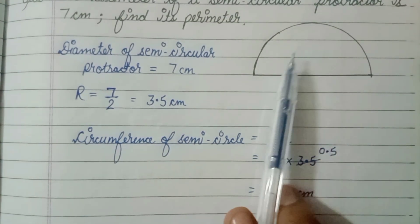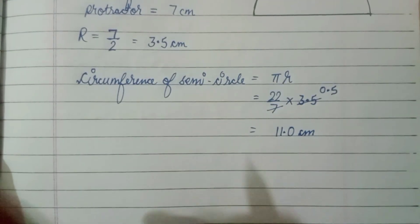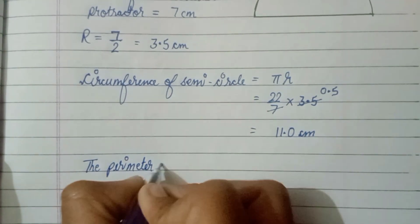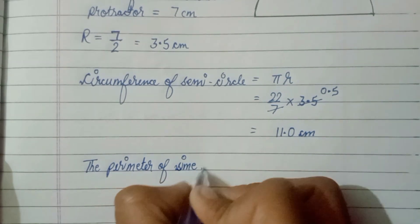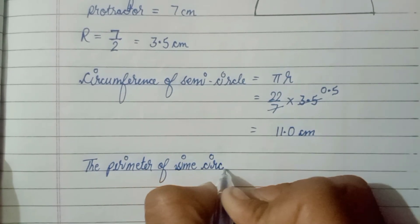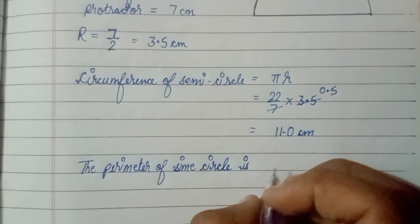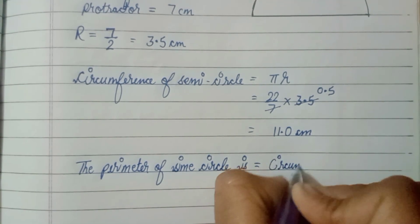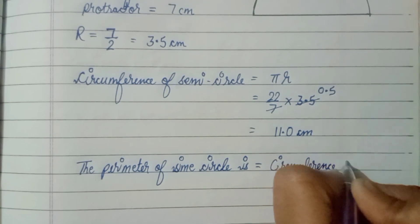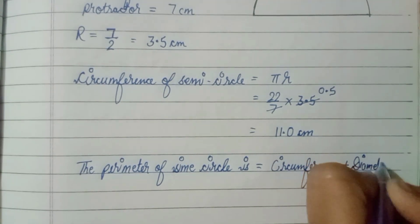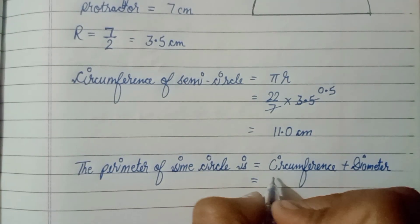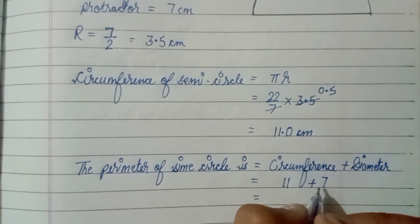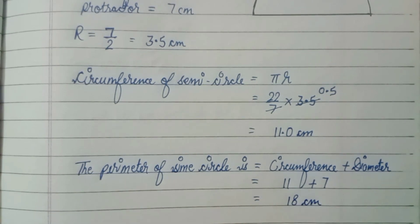We find the perimeter by adding diameter plus circumference. So the perimeter of the semicircle is circumference plus diameter — that is 11 plus 7 — which gives us 18 centimeters.